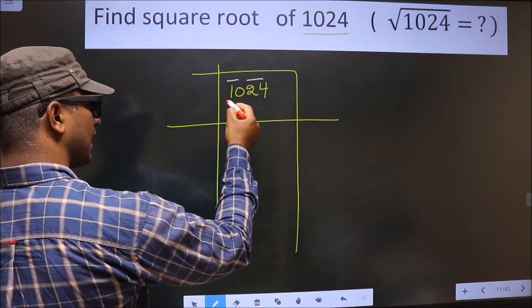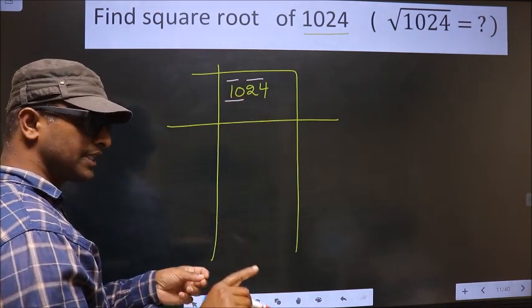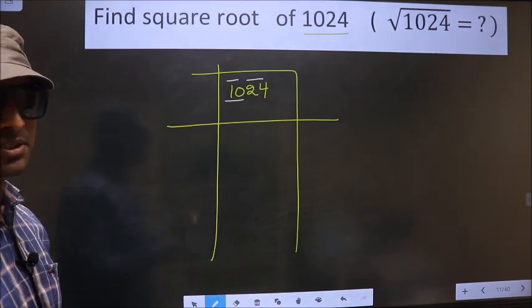Now here we have 10. 10 is not a perfect square. So now we should check 10 lies between which two perfect squares.